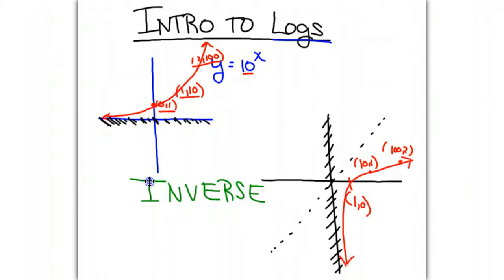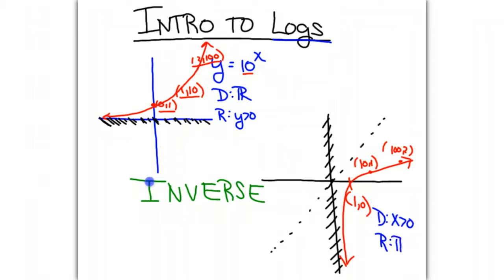We can see that we have an agreement. The domain of 10 to the x was all real numbers and the range was y greater than 0. On our inverse, the domain is now x greater than 0 and the range is all real numbers. The equation of this inverse we've created is the log function, with equation y equals log base 10 of x.